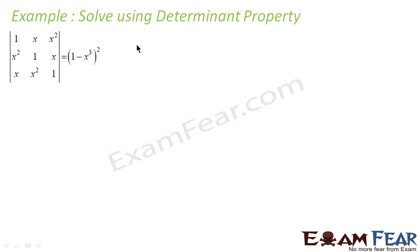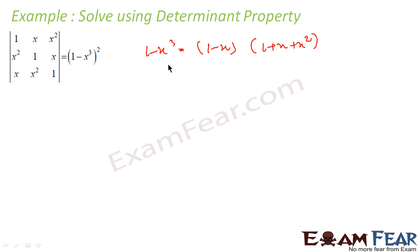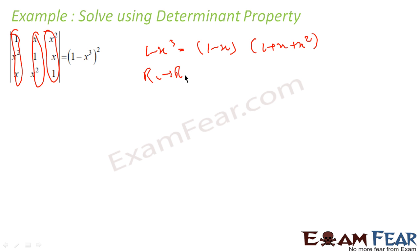This next example is also similar. First, note the formula: 1 minus x cubed equals 1 minus x times 1 plus x plus x squared — you should know this before solving. If you observe, adding all rows gives 1 plus x plus x squared in each column. So we again start with r1 equal to r1 plus r2 plus r3, take out the common factor, then subtract rows to get zeros and simplify. Similar approach — I'm not going to solve it for you.